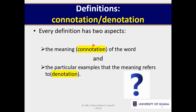Definitions also have two parts, but for now I am talking about aspects — you can think of definitions in two ways. You can think of a definition as having a connotation. Whenever I give you the meaning of a word, I have given you the word's connotation: what it connotes, what it stands for, what its criteria is. So if I say a bachelor is an unmarried adult male, I have just given you one connotation of the word bachelor — one meaning, one definition.